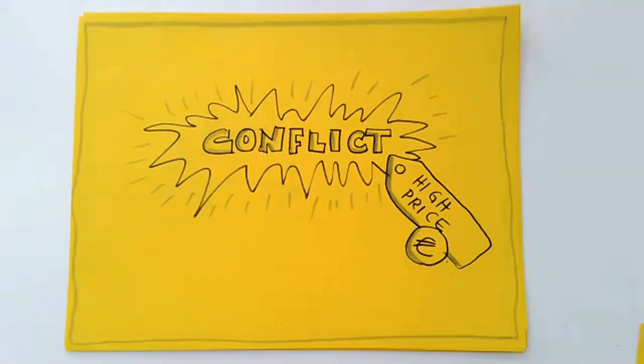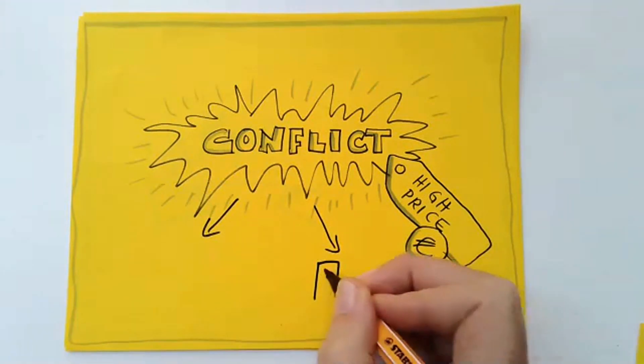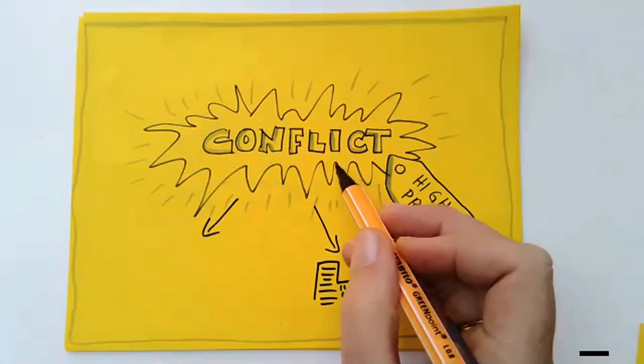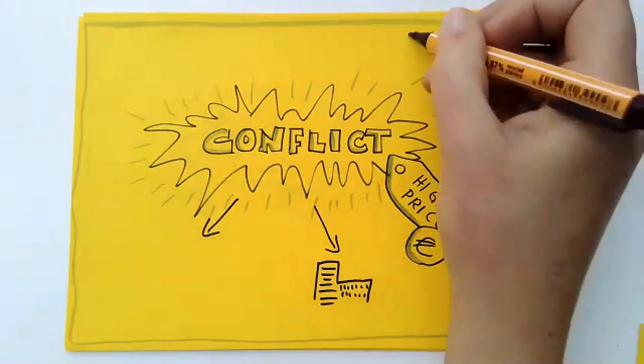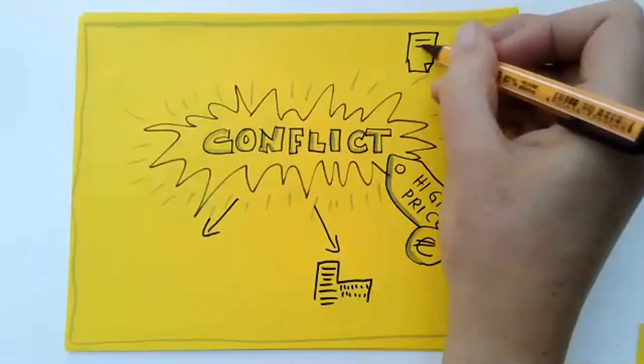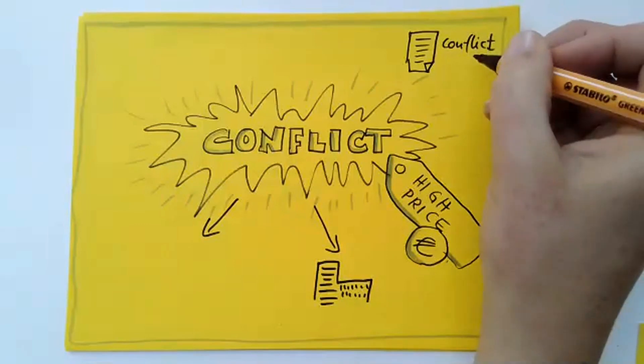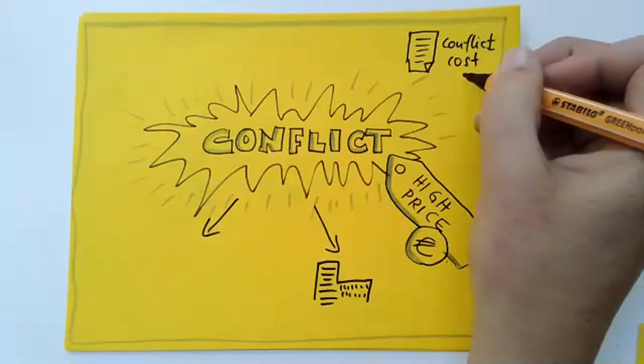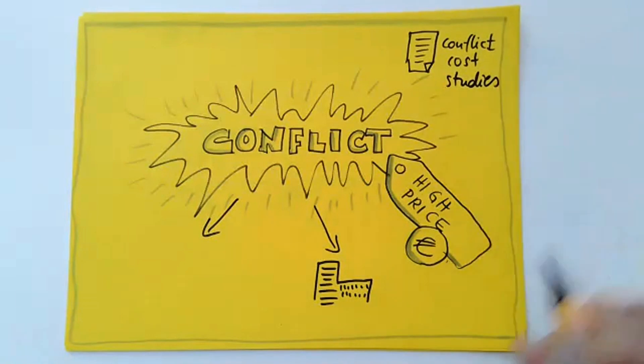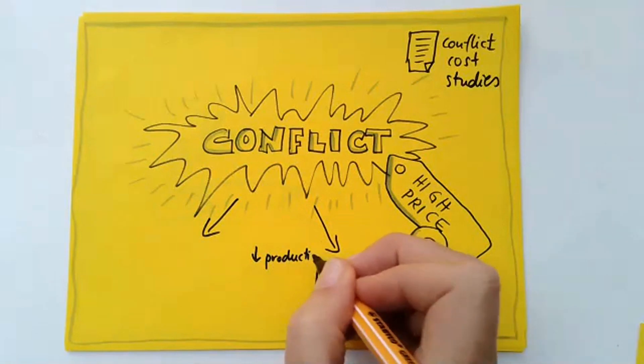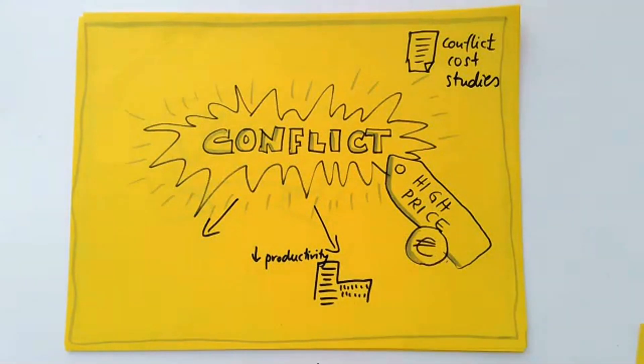However, if we don't manage conflict well, or if we poorly manage negotiation, there's a high price connected to it. And we can look at this from two angles, one is the organizational. You can maybe think for yourself, what are organizational conflict costs. There actually are conflict cost studies you can find on the internet, and you even can find a calculator to estimate the conflict costs in your organization. And what they find is that usually conflict lowers productivity. So you waste time on conflict, and the company's productivity goes down.